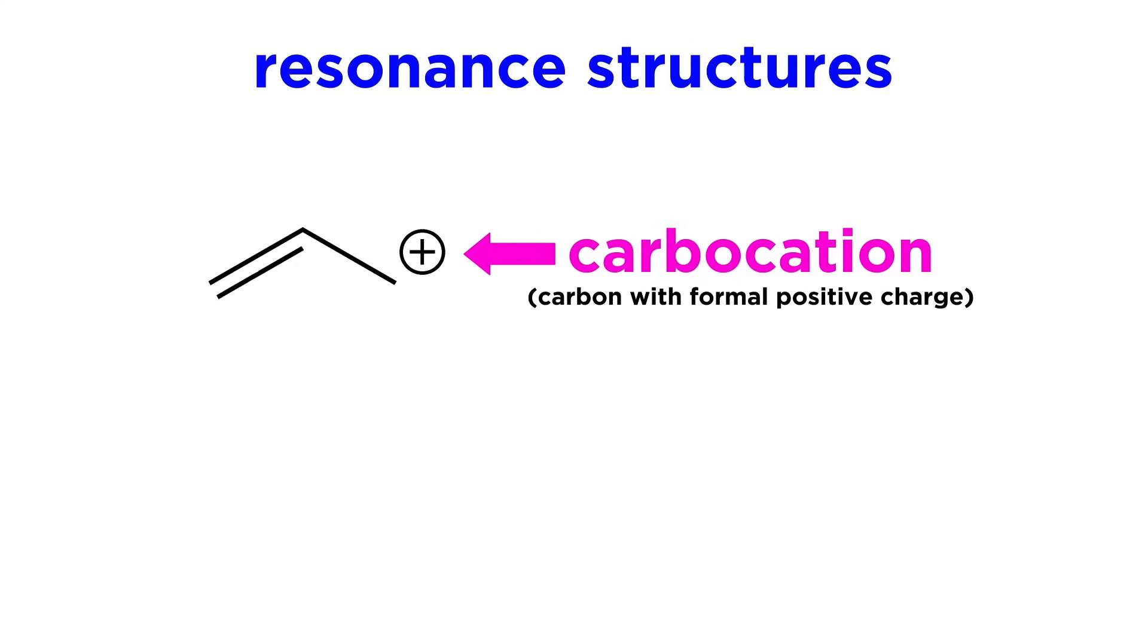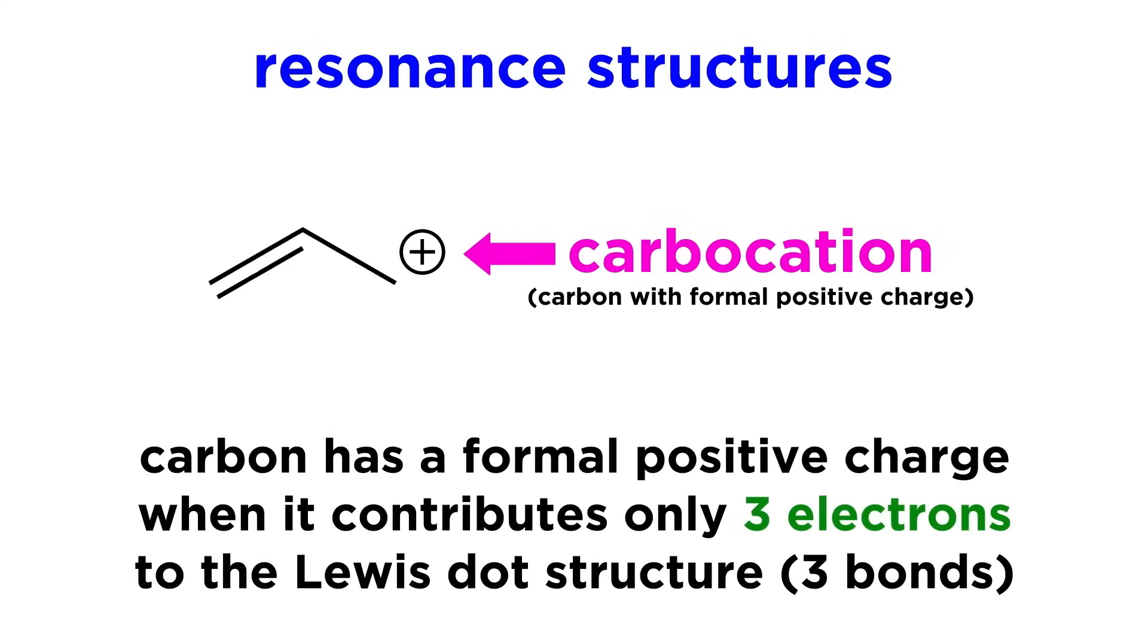Let's look at one more example. Here we have a pi bond adjacent to a carbocation, which means a carbon atom with a formal positive charge. In order to bear a positive charge, carbon must be contributing only three electrons to this Lewis dot structure, rather than its typical valence of four.